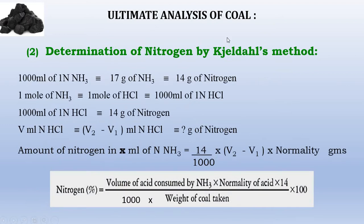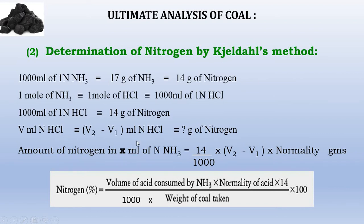In the ultimate analysis, nitrogen is determined by Kjeldahl's method by converting the nitrogen into ammonia. After converting, the ammonia is absorbed in a known volume of standard acid like HCl. So 1 mole of acid is equivalent to 14 grams of nitrogen. The volume of acid neutralized by ammonia is determined by carrying out two titrations at the end of Kjeldahl's experiment.